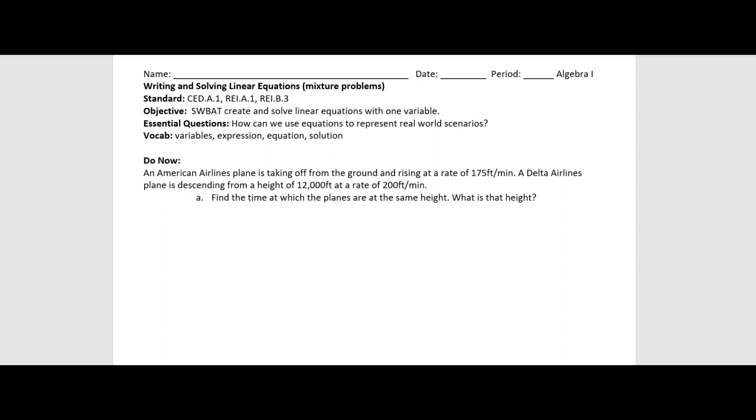We'll get to that in a second, but first we are going to look at a word problem similar to the one from our last video. An American Airlines plane is taking off from the ground and rising at a rate of 175 feet per minute. A Delta Airlines plane is descending from a height of 12,000 feet at a rate of 200 feet per minute. We need to find the time at which the planes are at the same height as well as that specific height. I encourage you to pause the video, try to work out this problem on your own, maybe refer to your notes from the last video and then come back and see how you did.